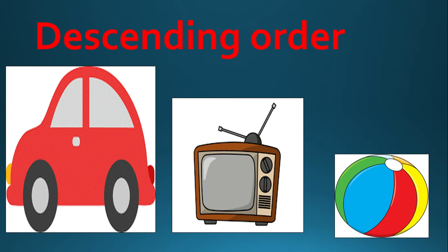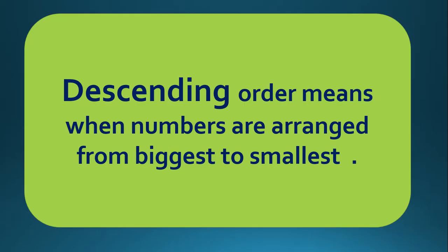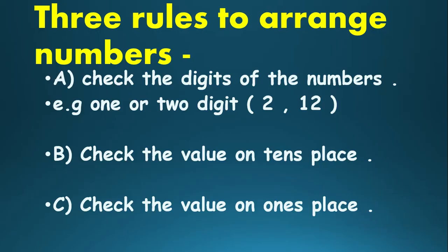Children, we can also arrange numbers in descending order. Descending order means when numbers are arranged from biggest to smallest. But before that, we should follow three rules. So what are the rules? Whenever we arrange the numbers, we should keep in mind these three rules.